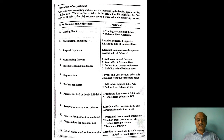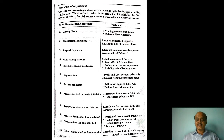Goods taken for personal use: this is deducted from purchases on the credit side of the trading account — purchases less goods taken for personal use. It is not a business purchase; it is taken for personal use. The drawings account is used, and the total drawings taken for personal use is deducted from capital in the balance sheet.